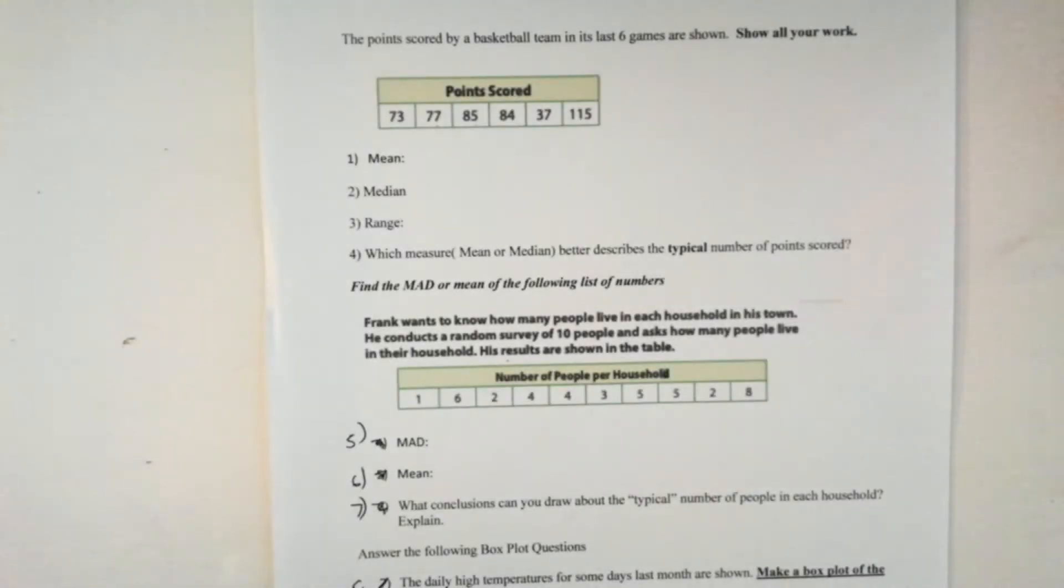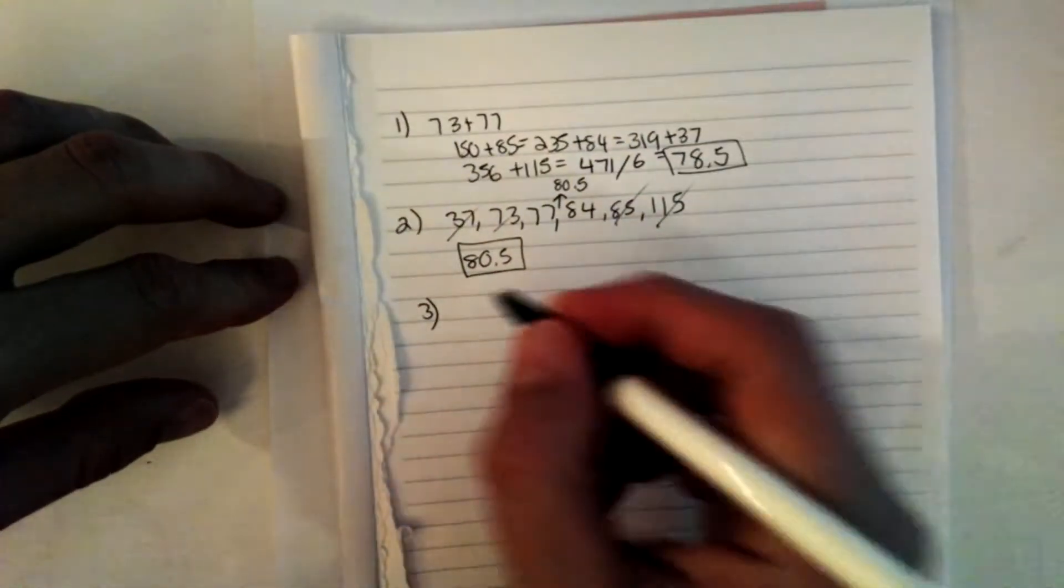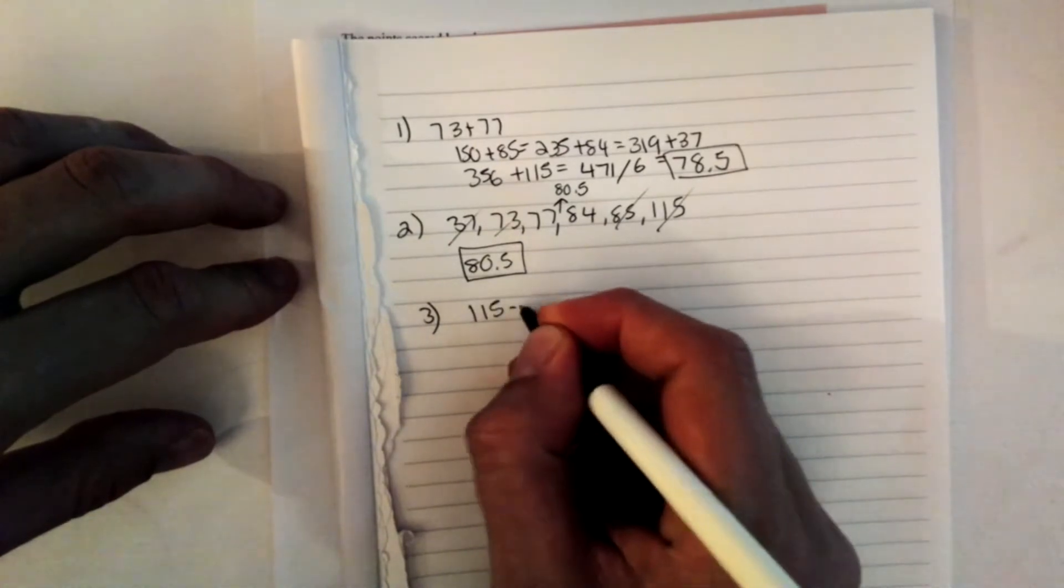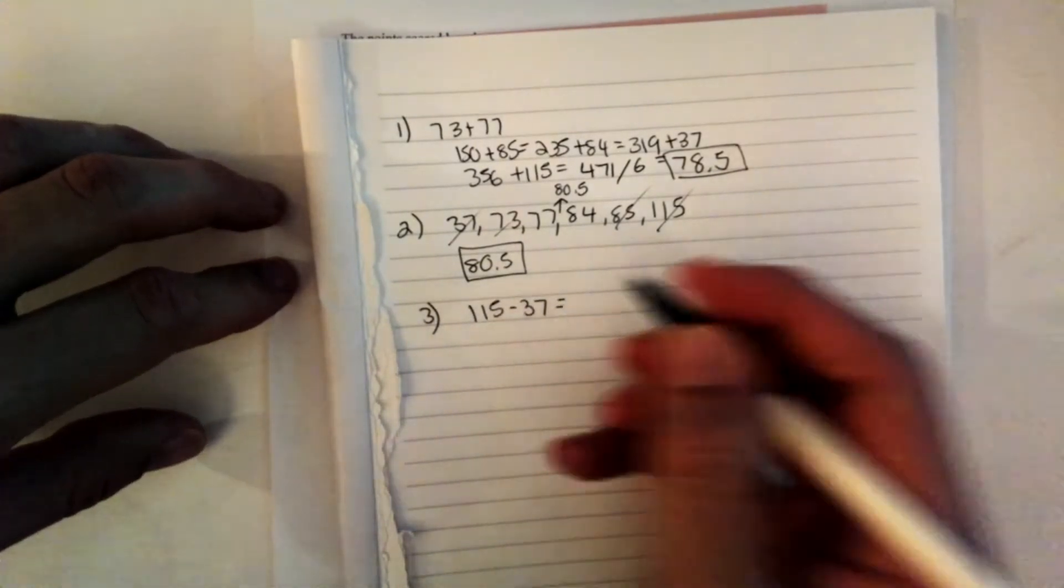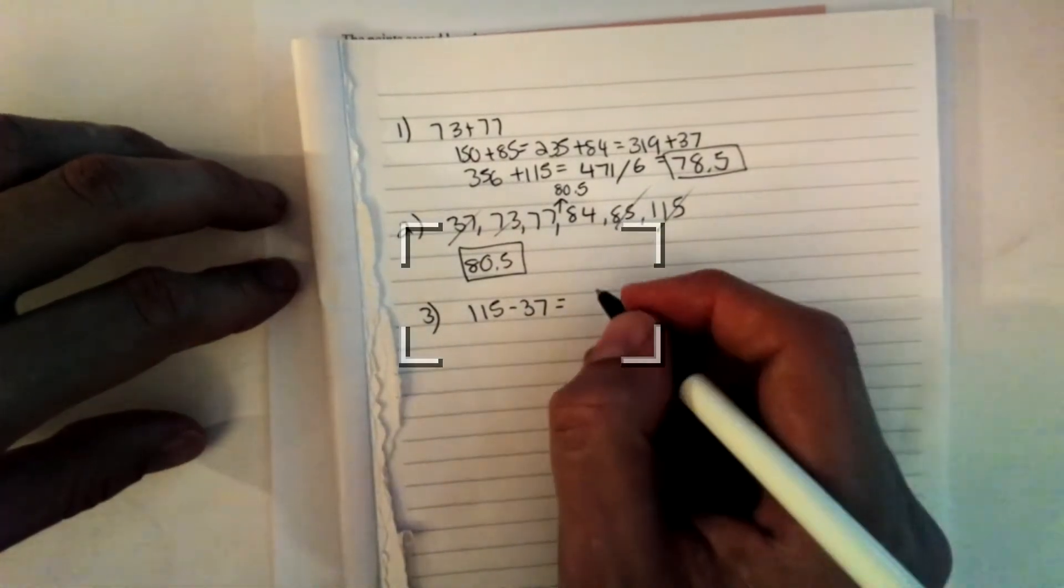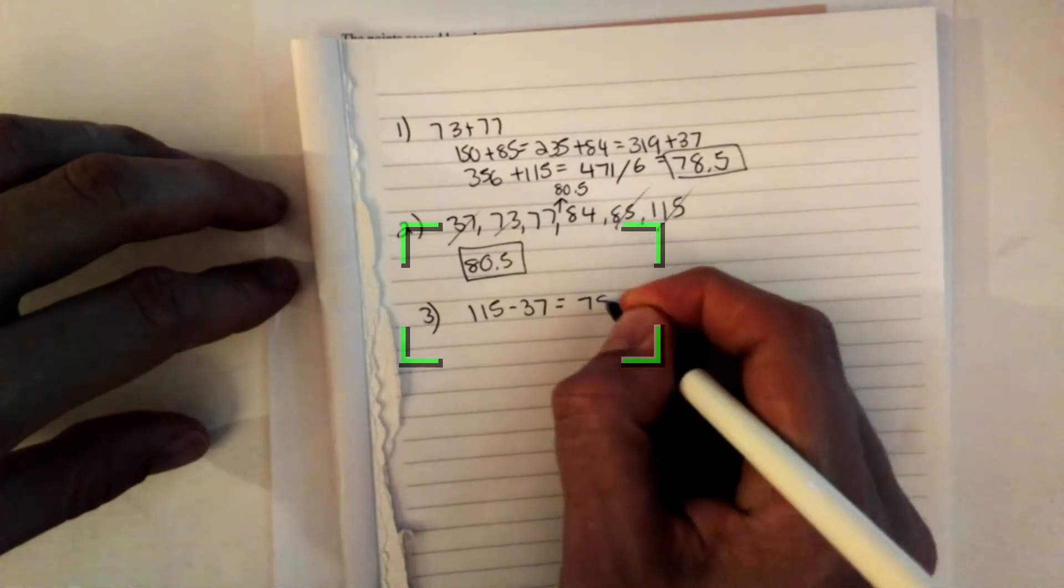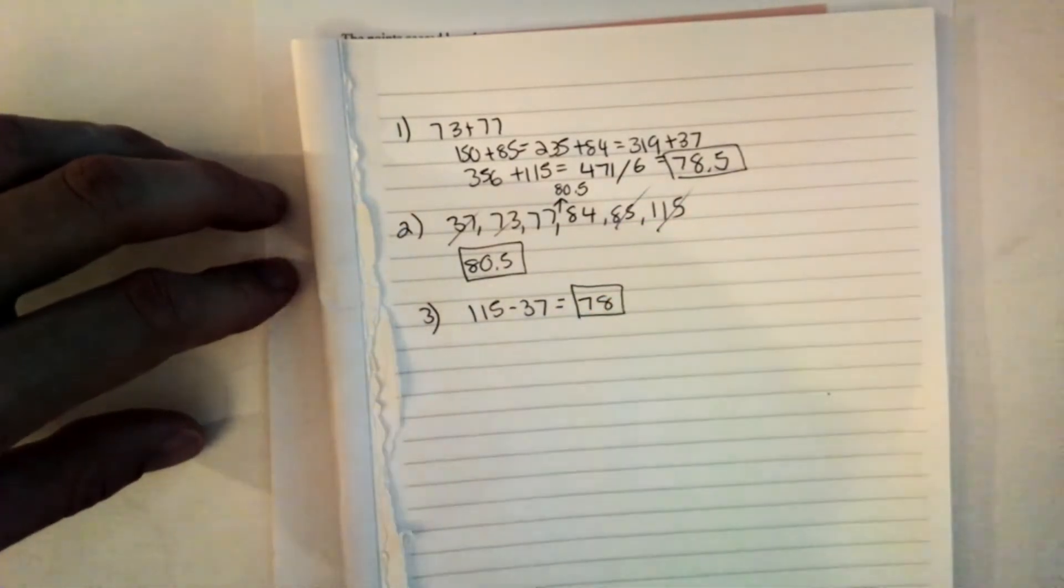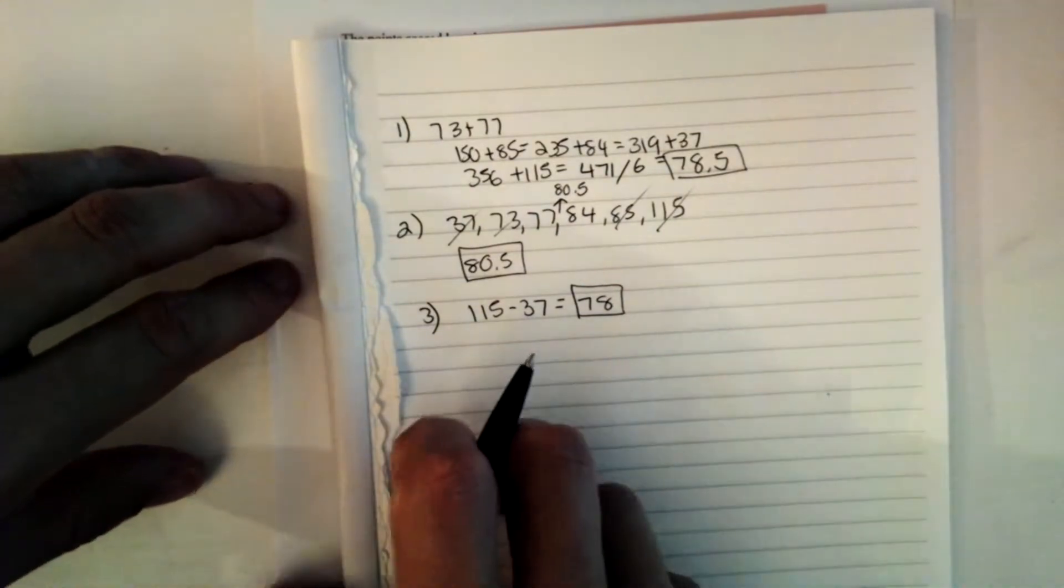Take a look at number 3. We're going to find the range of this data set here. Remember, the range is when you take the biggest number and you subtract it from the smallest number. In this case, we'll subtract 115 minus 37. And when I subtract 115 minus 37, I get 78. So the range for this data set is 78.